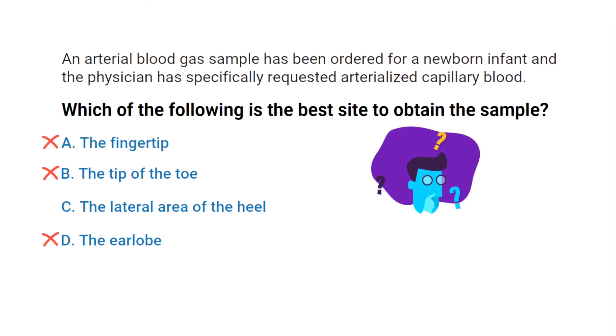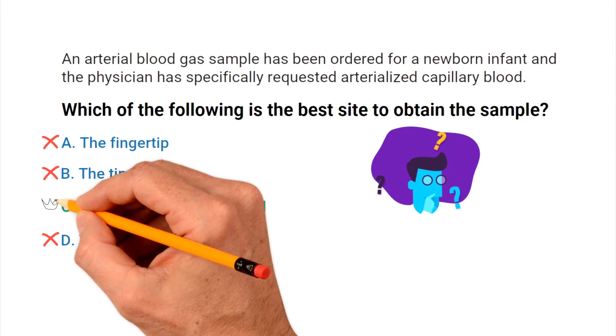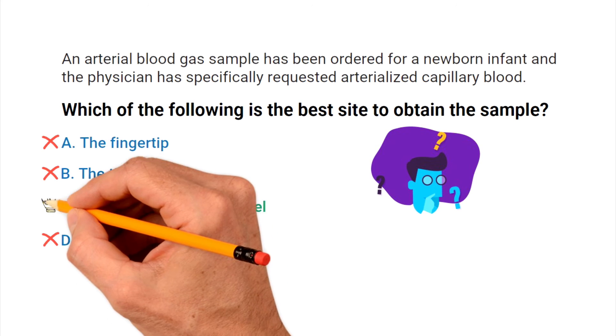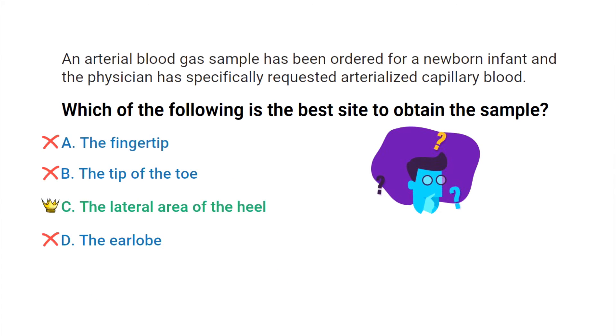By using what we know about capillary blood sampling in infants, as well as the process of elimination, we can determine that the correct answer is C — the lateral area of the heel.